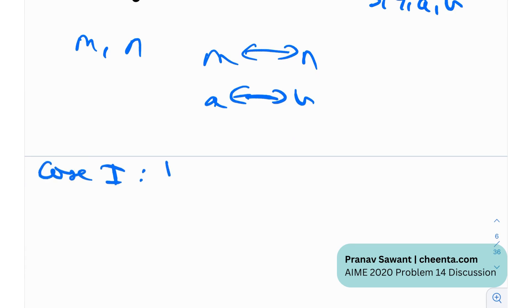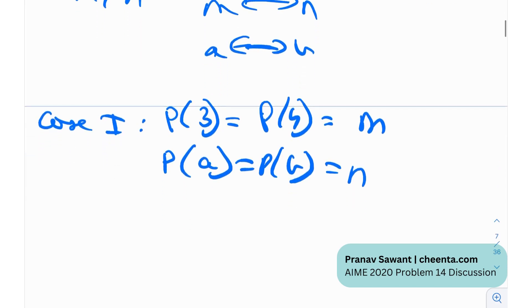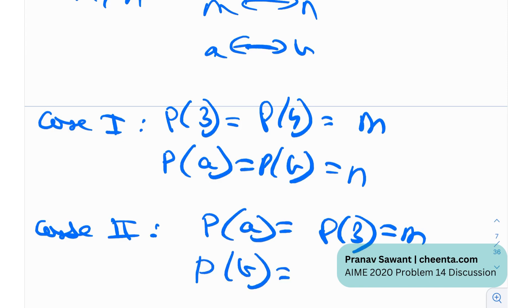Case one would be where p of 3 equals p of 4 equals m, and p of a equals p of b equals n. So here we have two roots for p equals m and two roots for p equals n. And case two is obviously the other case, where p of a equals p of 3 equals m, and p of b equals p of 4 equals n. So again, two roots in each case.